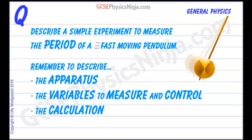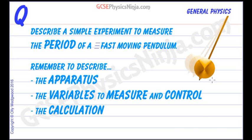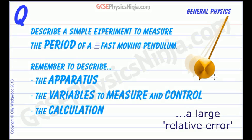Measuring the time that a fast moving pendulum takes to swing one way and then swing back the other way — that's the period of oscillation — can be quite a challenge if it's moving very quickly. Us humans have a reaction time of about 0.2 seconds, and that can be quite a large proportion of the time, so the error on our timings can be quite significant. So how could we do this more accurately?